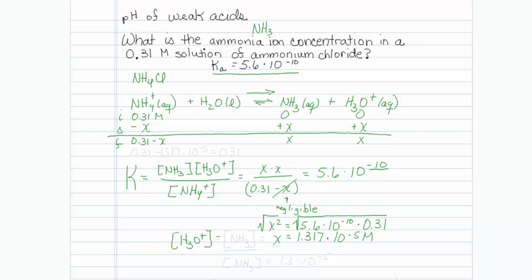So hydronium is also equal to my ammonia concentration which I have represented as x. The other concentration, my starting concentration ammonium, if I look at it, it is 0.31 minus x. So 0.31 minus 1.317 times 10 to the minus fifth is still equal to 0.31. So my assumption that x was negligible compared to 0.31 was pretty good.